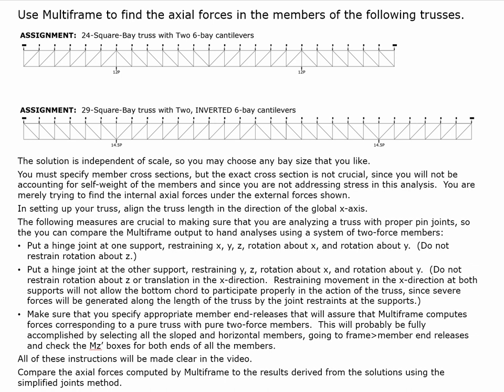The solution is independent of the scale, so we can choose any scale we want. We're going to set it up with the bay size being one foot by one foot. Feet is the standard unit for member lengths, and member cross-sectional properties will be in inch units. We must specify member sections, but this is not crucial because we're not looking at self-weight or addressing stress at this point — we just want to calculate what the forces are.